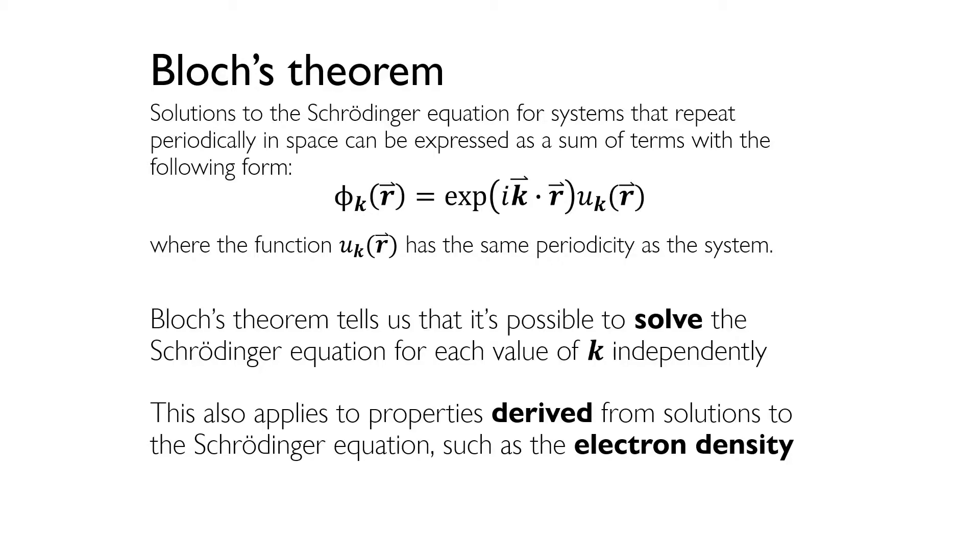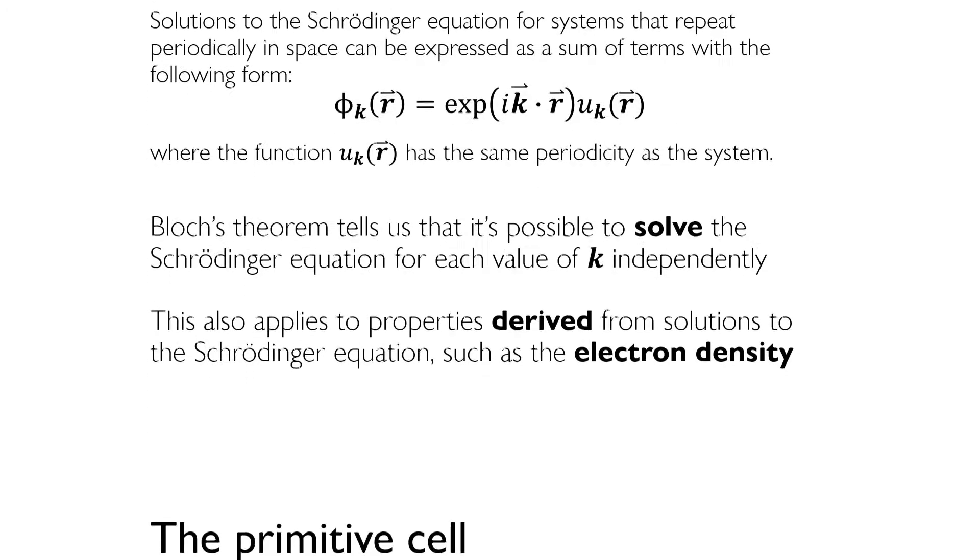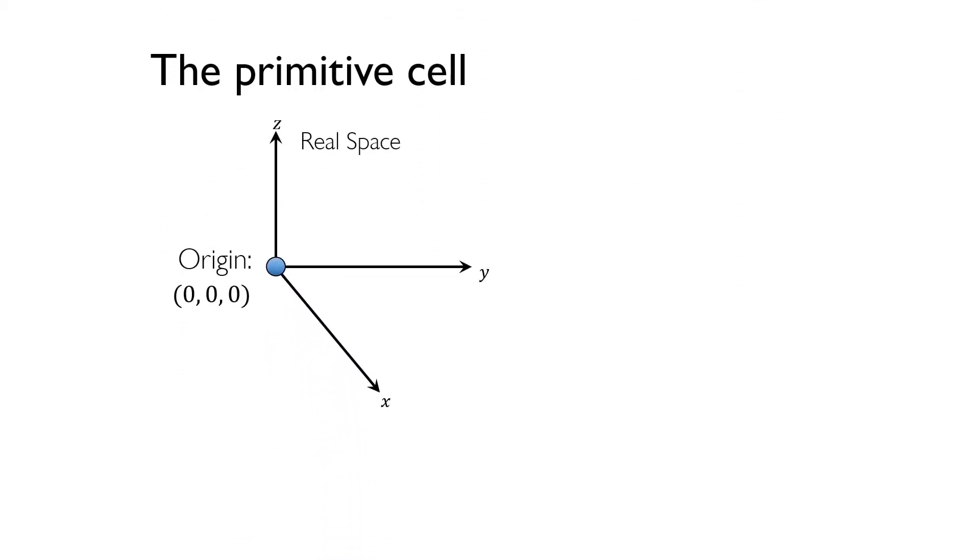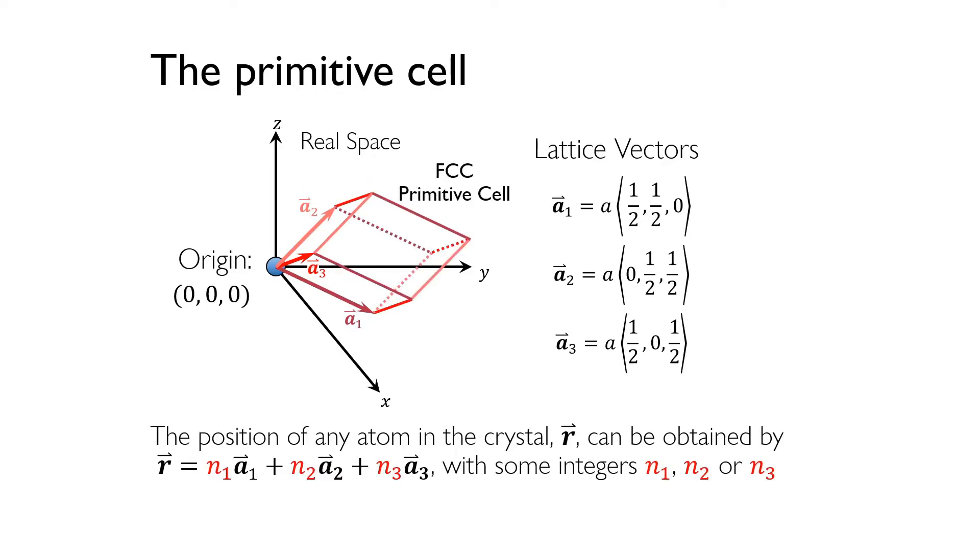But how do we get to k-space from real space? To answer this question, we need to start by examining the concept of a primitive cell. You might remember that a primitive cell is the most basic supercell that can describe an entire crystal. The primitive cell for a face-centered cubic crystal can be described by the vectors a1, a2, and a3 that you see here. For convenience, the origin of the primitive cell is at the position 0, 0, 0. Once you know what the primitive cell is for your crystal, you can easily find the position of any atom inside the crystal by a linear combination of these three lattice vectors with integer coefficients.